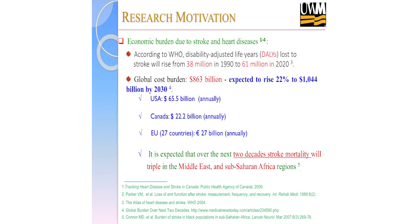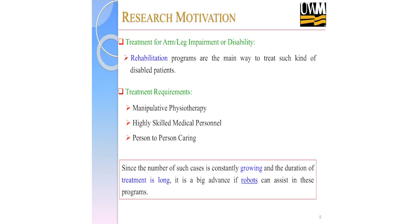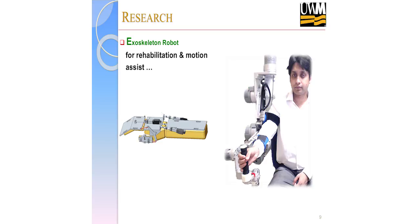The statistics show that elderly people and stroke-affected people are increasing day by day, while we have a shortage of doctors and physiotherapists. We need additional support to help disabled people. Treatment for this kind of disability requires manipulative physiotherapy from highly skilled personnel, person-to-person caring, and treatment durations of more than a year or two. That's why we thought if we can make a robot to assist disabled people, it would be a great advancement.